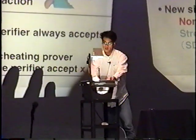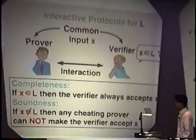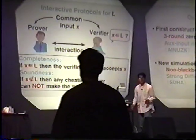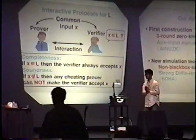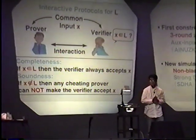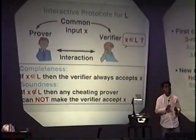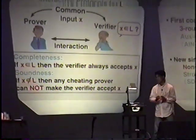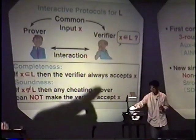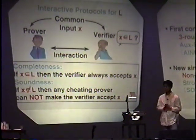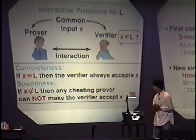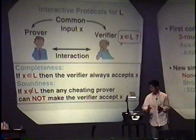I start by reviewing the notion of interactive protocol for language-membership problems. We consider two-party protocols, such as the Prover and the Verifier. They take a common input X, and the Prover tries to convince the Verifier that X belongs to language L through the interaction. And the interactive protocol requires two conditions: one is completeness and the other is soundness.